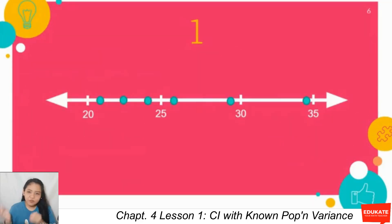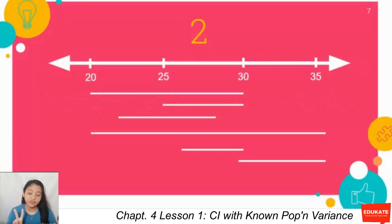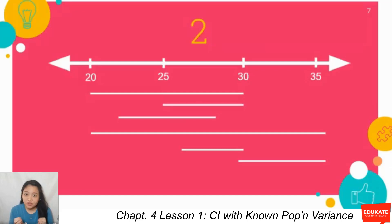The first graph can be a representation of the point estimates — you have a point estimate of 22, a point estimate of 23. When we say estimator, it's the mathematical expression or formula. You may probably use my voice, my facial features, or the background as your estimator. Your estimate is the numerical value when you apply the estimator using the sample data. The second graph represents the confidence estimate — each line represents an interval estimate. The width of the interval estimate, or how shorter or longer your segment is, represents the accuracy. The narrower the interval, the more accurate the interval estimate.